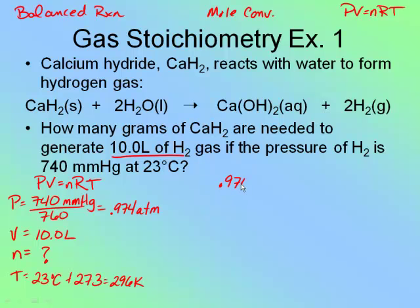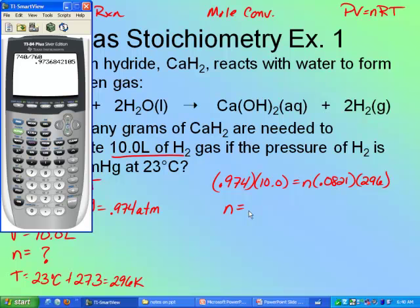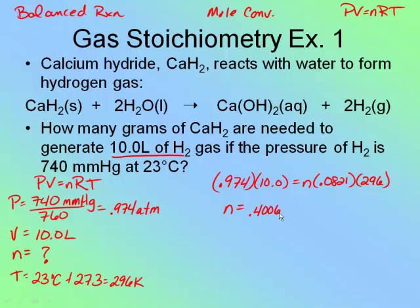So: 0.974 × 10 = N × 0.0821 × 296. Plugging into the calculator: pressure times 10, divided by (0.0821 × 296), gives 0.40067 moles. This is moles of hydrogen. If I'm ever confused about what substance it's for, I look back at the problem for the word 'of' — that always tells me what substance.